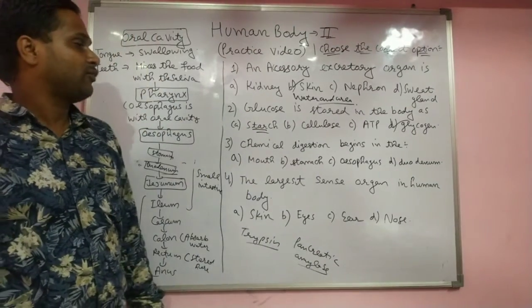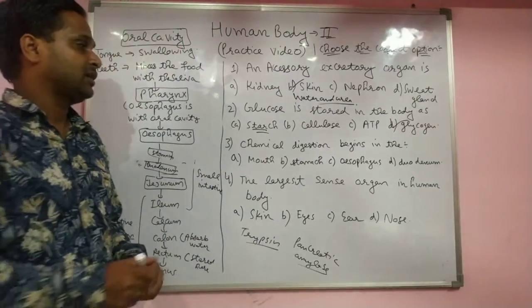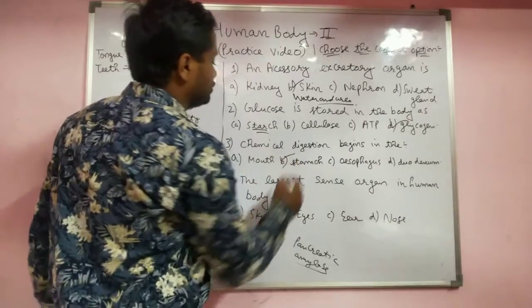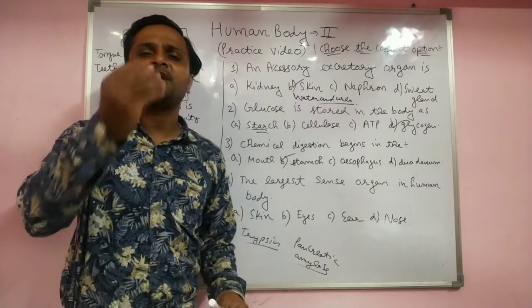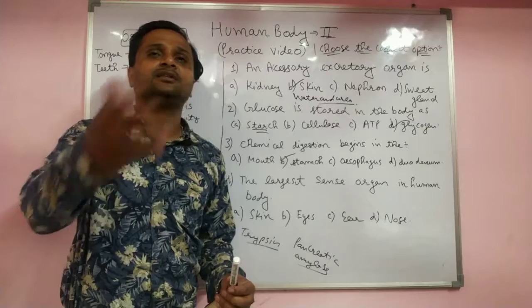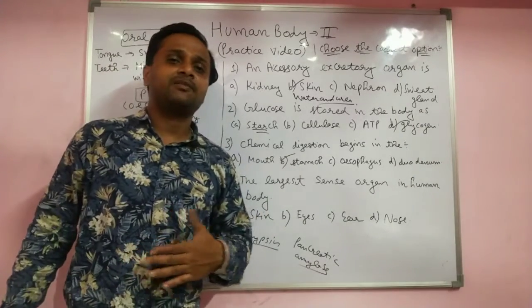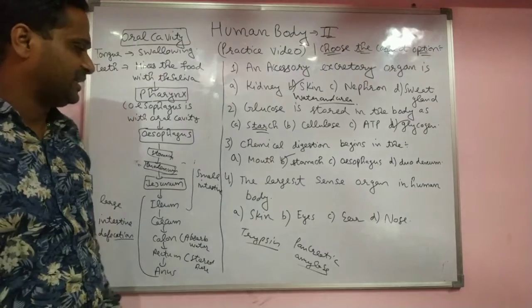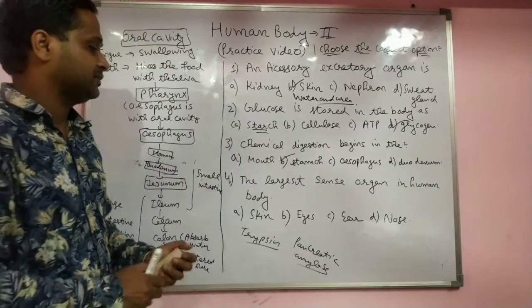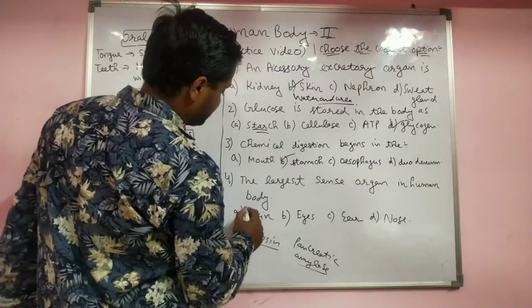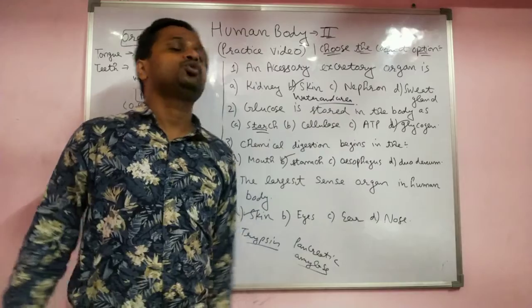Chemical digestion begins in the mouth where salivary amylase enzyme works, but for exam purposes we write the stomach, where the main digestion occurs — full digestion occurs in the small intestine. The largest sense organ in the human body is the skin.